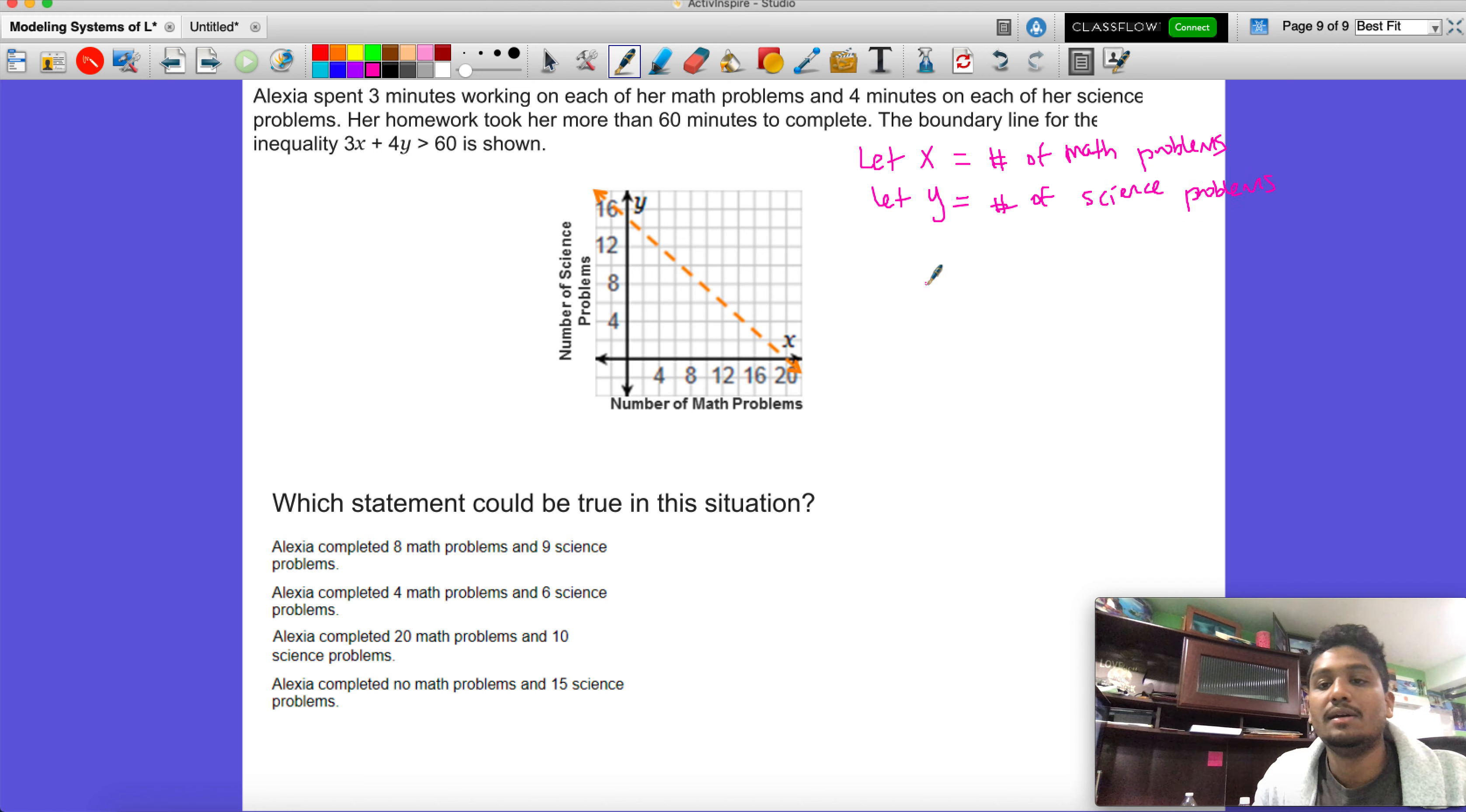We're just rebuilding this equation to make sure you understand how that works. She spent x is the number of problems and she spent three minutes per math problem, and she spent four minutes on every science problem.